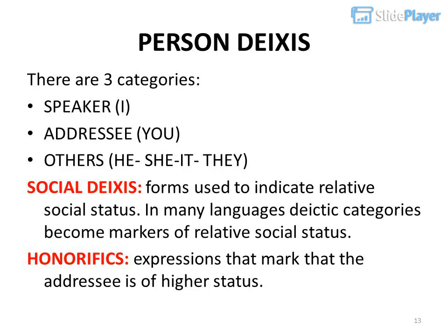Person deixis has three categories: Speaker (I), addressee (you), others (he, she, it, they). Social deixis refers to forms used to indicate relative social status. In many languages deictic categories become markers of relative social status. Honorifics are expressions that mark that the addressee is of higher status.